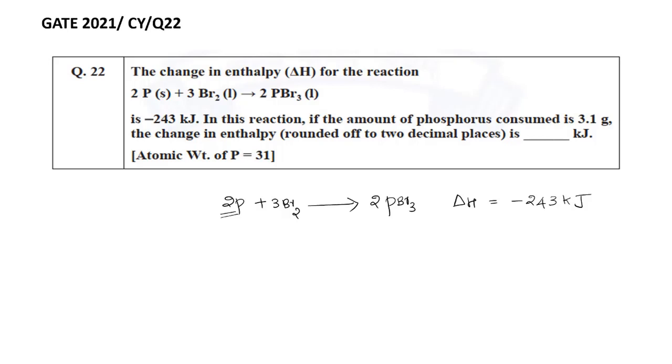We have to find out the ΔH when 3.1 grams of phosphorus is consumed. Now let's try to solve this question.